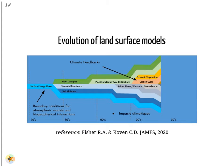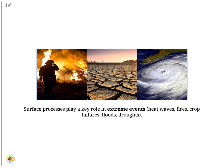All components except land use change emissions have significantly grown since 1959. The processes that govern carbon cycle feedbacks are highly affected by both biophysical feedbacks in the earth system and by land use decisions that are in turn affected by climate impacts on human societies. Surface processes play a key role in extreme events, such as heat waves, fires, crop failures, floods, and droughts.